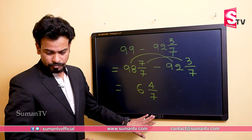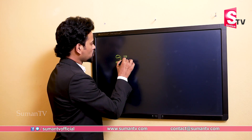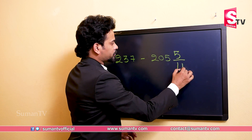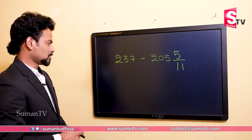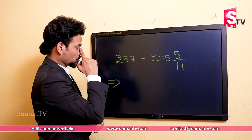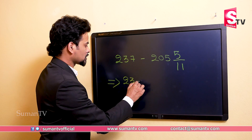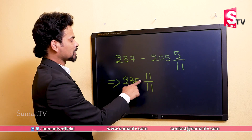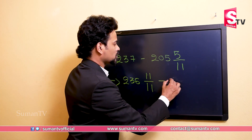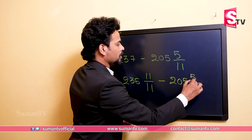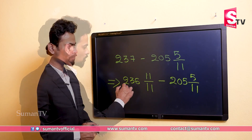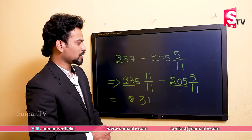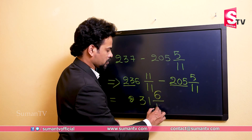Let's do one more example: 237 minus 205 and five by eleven. I'll give you some time to solve this. We write 236 and eleven by eleven — eleven by eleven is one, and 236 plus one is 237 — minus 205 and five by eleven. So 236 minus 205 is 31, and eleven minus five is six. The answer is 31 and six by eleven.